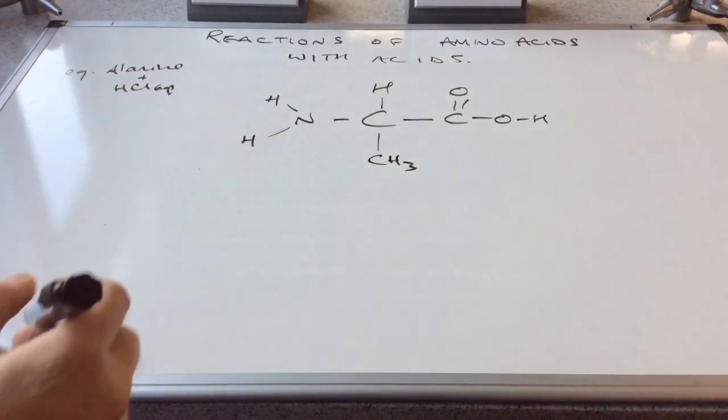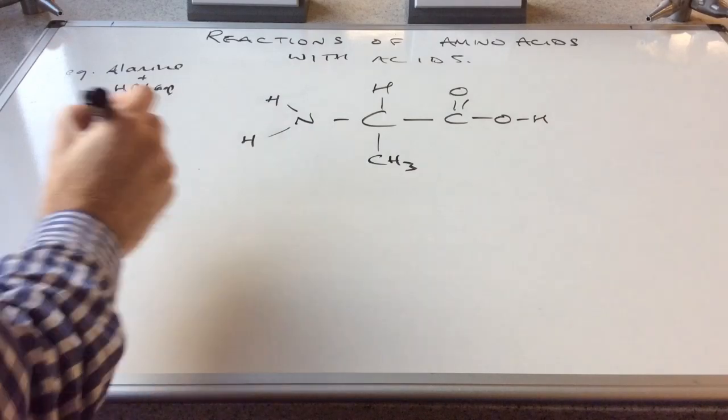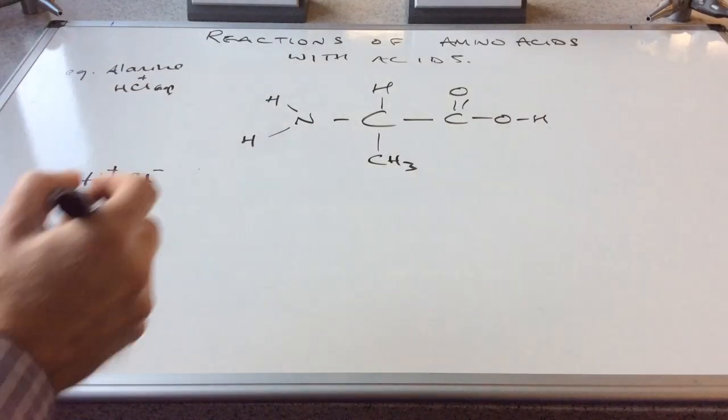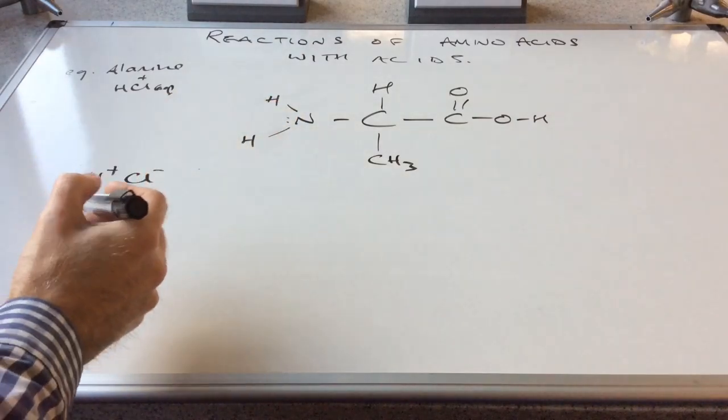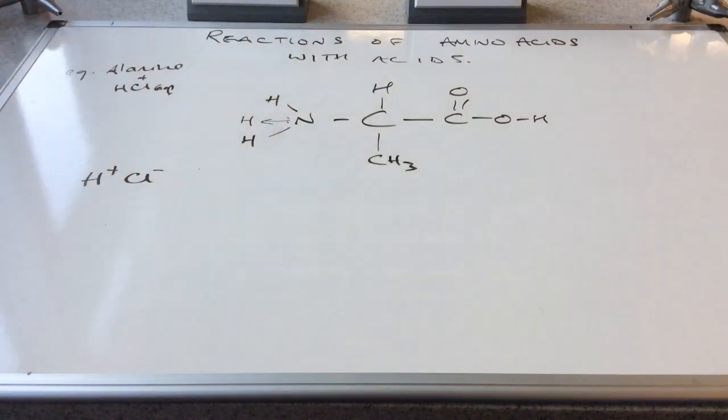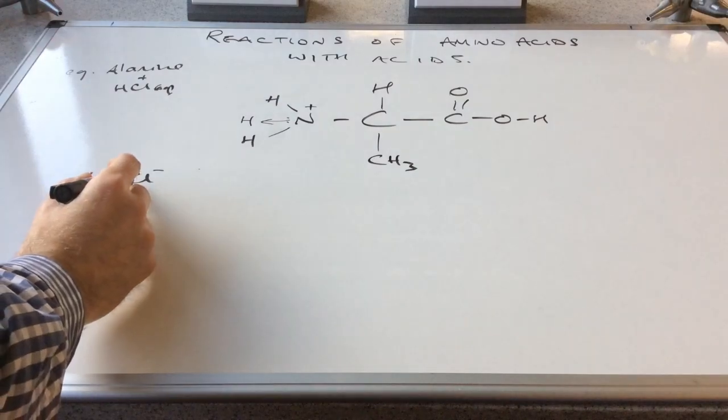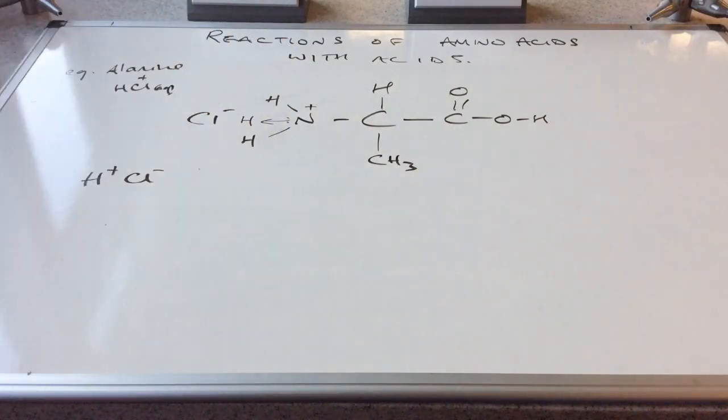So hydrochloric acid is effectively H+ ions and Cl- ions. The nitrogen on the amino group has a lone pair that's going to accept this proton. So we're going to get this dative covalent bond formed and that would become positively charged. And the chloride ion would be there as well. And so we would get this product here.